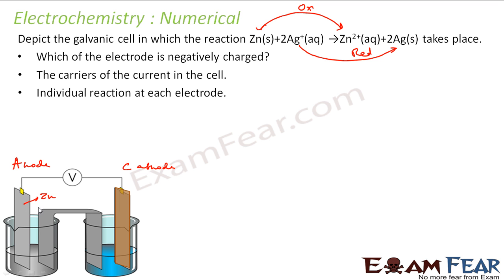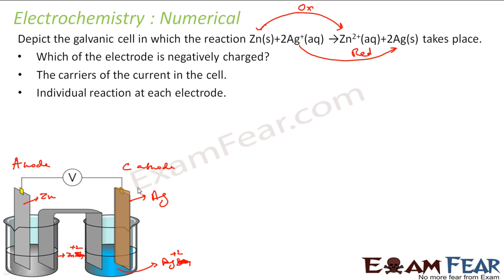Zinc is getting oxidized, so zinc is the anode. It will be in a zinc sulfate solution. Silver ion Ag+ is getting reduced, so silver is the cathode in an Ag+ electrolyte solution. Zinc becomes Zn2+, producing more electrons at the anode side. Electrons will flow from the zinc electrode to the silver electrode.